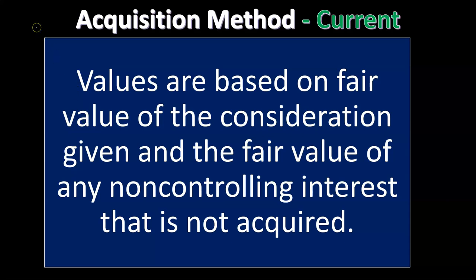That non-controlling interest complicates matters. The acquisition method is not an easy method. The pooling method was probably easier because you just took the book value without reappraising everything. With the acquisition method, you have to do appraisals. If consideration is just cash, it's easy to value. If it's cash and stock, you need to value the stock — publicly traded stock can be valued by its trading price. If property is being paid, you may need appraisals. We'll talk more about that in future presentations, but for now, just note that the acquisition method is the current method.